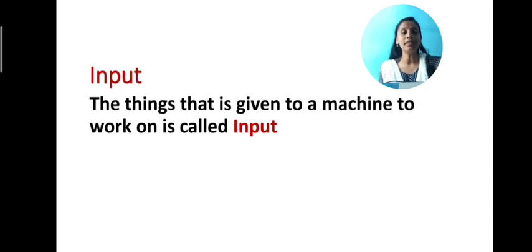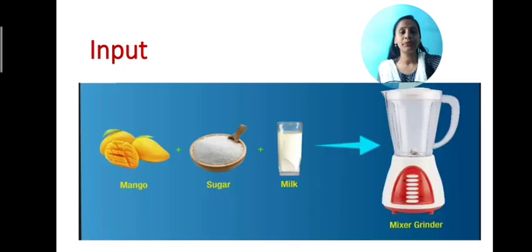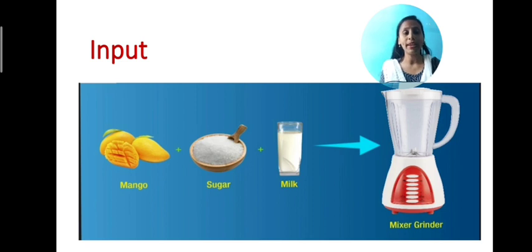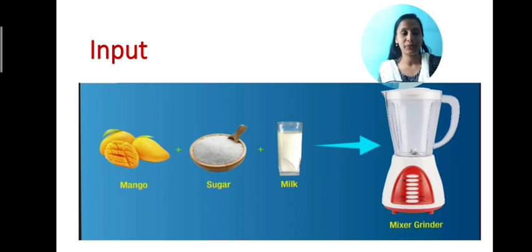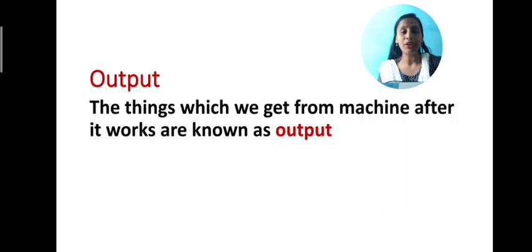Let's take an example. If you want to make a mango shake, you need three things: mango, sugar and mint, put into the mixture grinder. These three ingredients are called input.